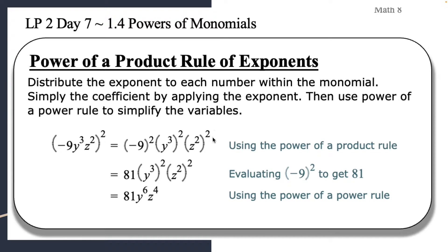So we're distributing that piece. And then we're going to simplify the coefficient by applying the exponent. So we are going to actually apply the exponent to any coefficient we have. So we have negative 9 squared, well that's negative 9 times negative 9. So negative times a negative is a positive, 9 times 9 is 81. So we get our 81 here.